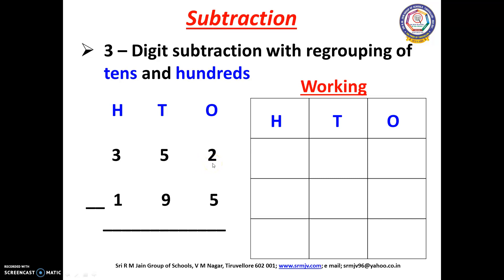Whenever we start the sum we have to start from our 1's place. In the 1's place we have 2 and 5. We cannot subtract 5 from 2. So we are going to borrow 1 from the 10's place. Now this 5 will change into 4 and 2 will change into 12.